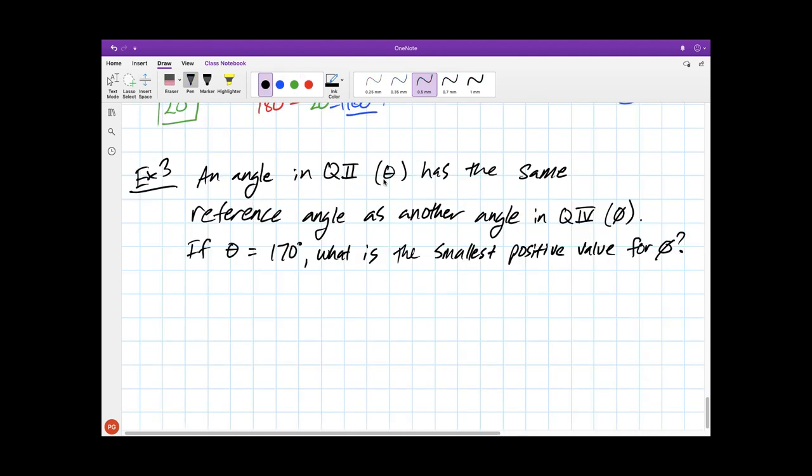An angle in quadrant two, theta, has the same reference angle as another angle in quadrant four called phi. If theta is equal to 170 degrees, what is the smallest positive value for phi? As I always suggest if you can, draw a picture. This is no exception.